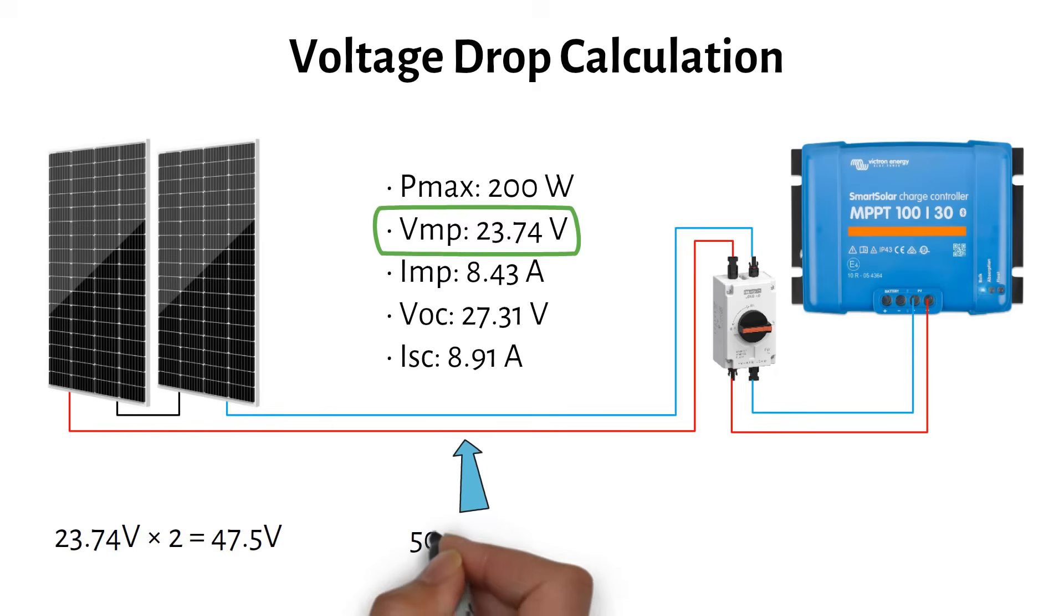And the panels are 50 feet or 15 meters away from the charge controller. That's the one-way distance. The voltage drop calculator will automatically double it for the round trip.